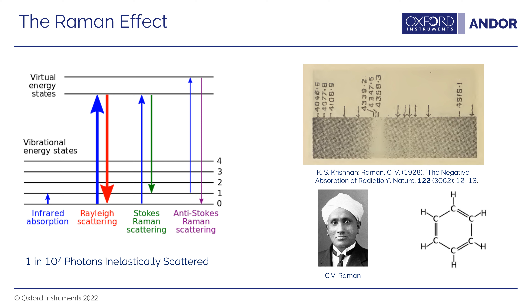The light comes in and scatters off a virtual energy state. Most of the time this scattering process is elastic, so nothing happens — the light interacts with the sample and comes out having exactly the same energy it went in with. That's the Rayleigh scattering.